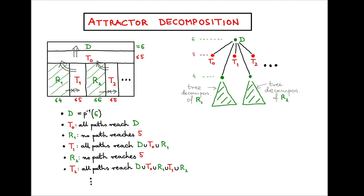Here is one way to define an attractor decomposition. Imagine that we have a graph in which every vertex has a priority, and for concreteness let's assume that the top priority is 6 — there are no vertices with priorities higher than 6. We define set D to be the set of vertices whose priority is exactly 6. Then we define set T0, which you should think of as a transient set, or the attractor to D: the set of all vertices from which every path ends up in D.